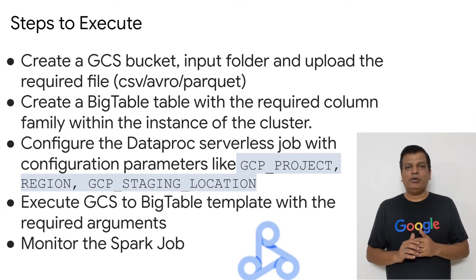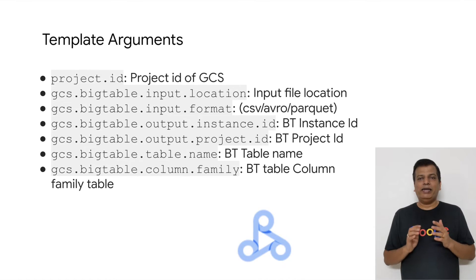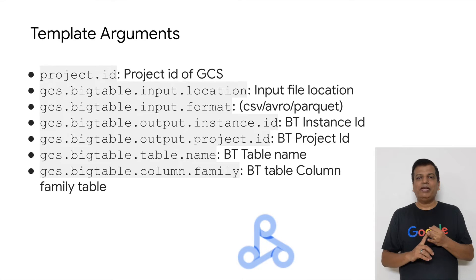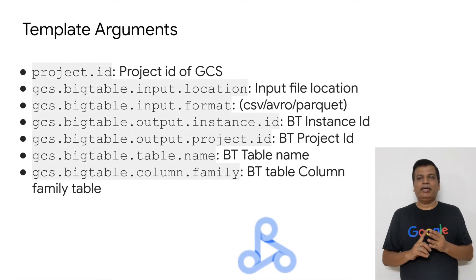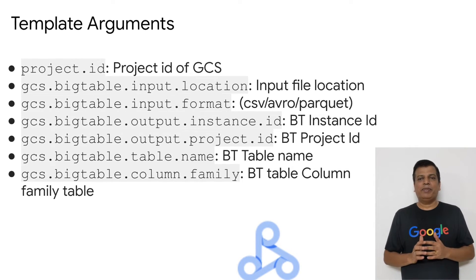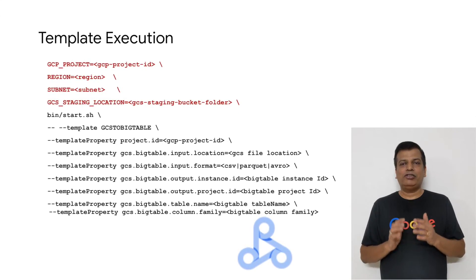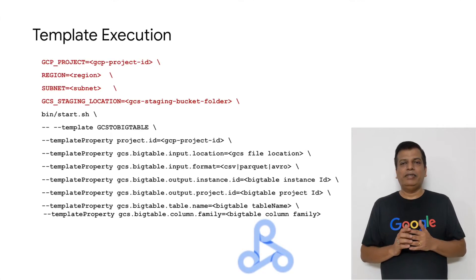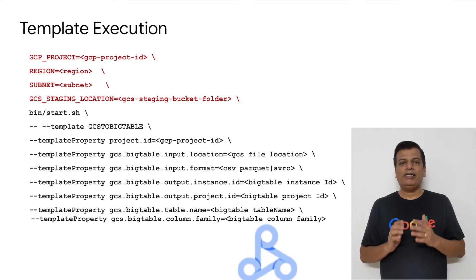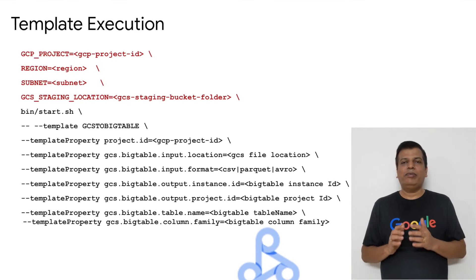The template to execute is GCS to Bigtable Java, after which the batch job has to be monitored. Here are the arguments that need to be passed while executing the template. The major ones are the location of the input file, the details of the Bigtable instance, the table name, and the column family. The respective project IDs of the GCS storage and Bigtable also need to be passed. The commands in red show the configuration parameters that need to be set once during the session. The start command triggers the template and the template name has to be given along with the required arguments. Once submitted, it builds the job, copies to GCS, and then triggers a batch job in Dataproc serverless.